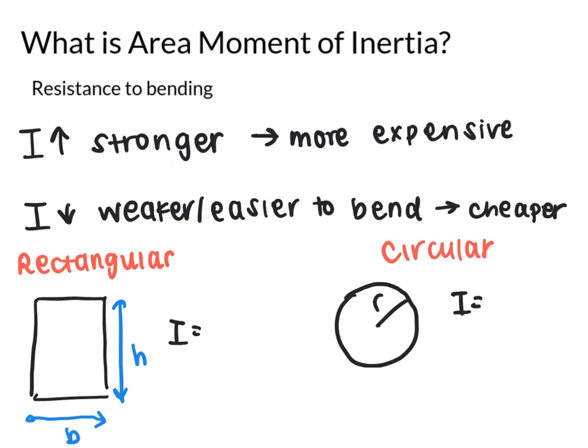For our purposes we're only going to be focusing on two types of cross section, a rectangle and a circle. The equation for a rectangle area moment of inertia is going to be base times height cubed all over 12. And for a circle it's going to be pi radius to the fourth power all over 4.